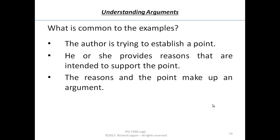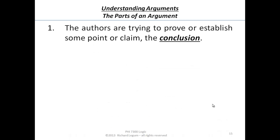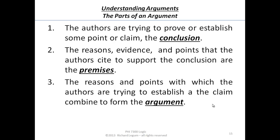And if you think about it, that's how we come to conclusions about many things — how we come to our understanding of many things. This suggests three different parts of the argument. At number one, the author is trying to prove or establish some point or claim — what he's trying to establish is the conclusion. Then the reasons, evidence, and points that the author cites to support the conclusion are the premises. And the reasons and points with which the author is trying to establish a claim combine to form the argument.